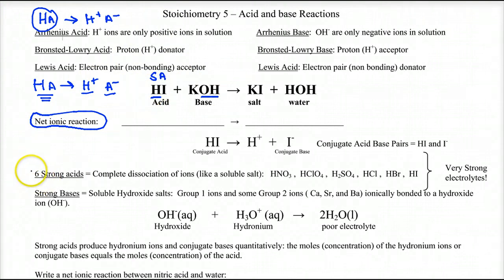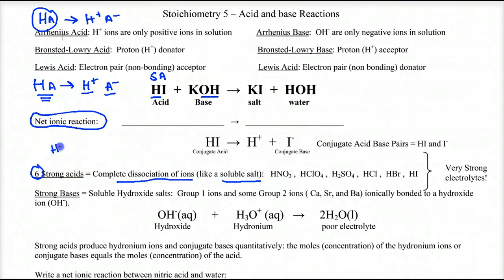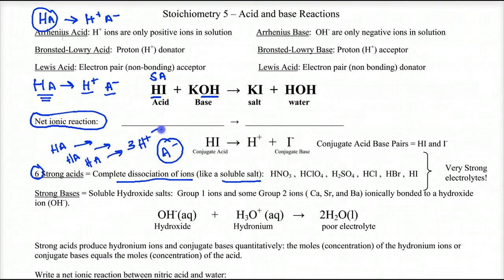There are six strong acids — six is good enough. There's complete dissociation of ions, just like a soluble salt. A strong acid is defined not by a low pH, but by complete dissociation. If you have three HAs and it's a strong acid, you're going to produce three H+ ions and three conjugate base ions. What makes it a strong acid is that the conjugate base has no ability to reaccept that H+ and go backwards. So a strong acid has conjugate bases that don't ionize water.